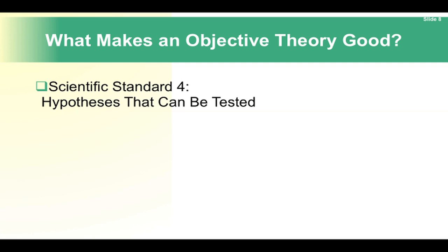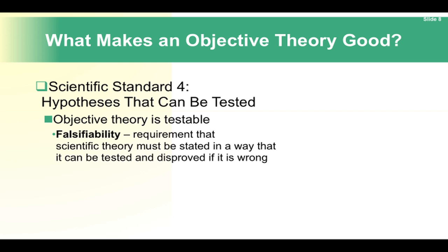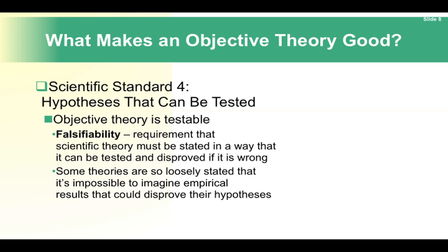Scientific Standard 4: A hypothesis that can be tested. Objective theory is testable. Falsifiability is the requirement that a scientific theory must be stated in a way that it can be tested and disproved if it is wrong. Some theories are so loosely stated that it's impossible to imagine empirical results that could disprove their hypothesis.